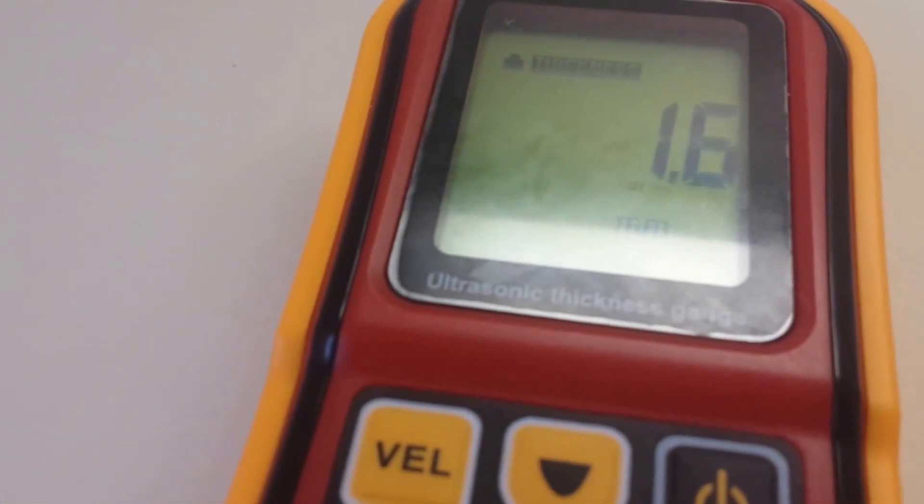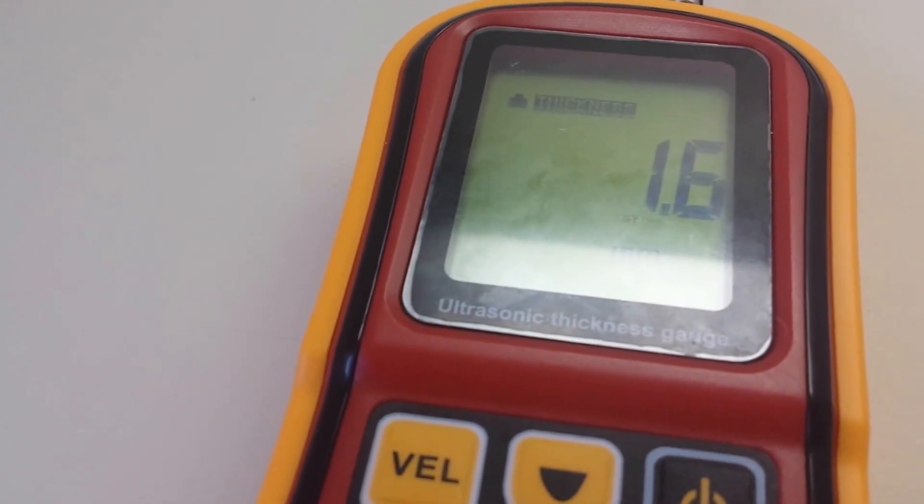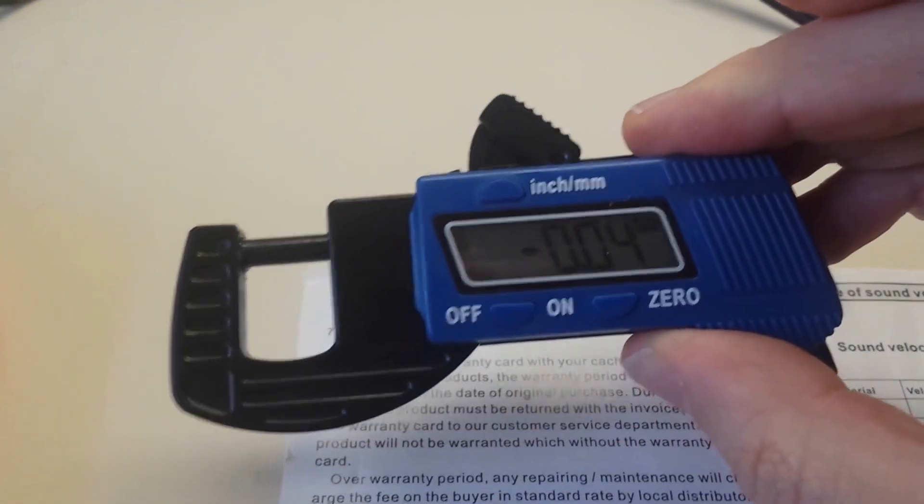Firmly on the coin. And what do we read? 1.6, 1.5, 1.6, which is exactly what we were getting with the actual digital thickness gauge.